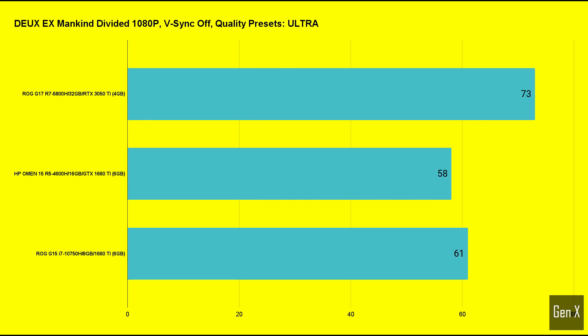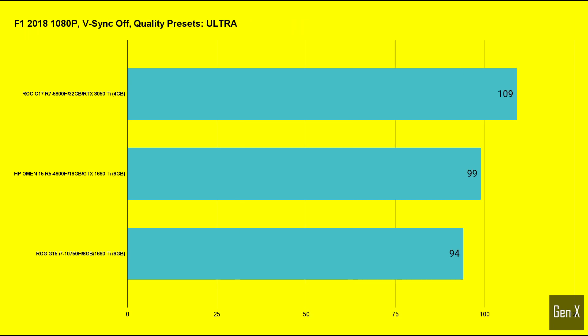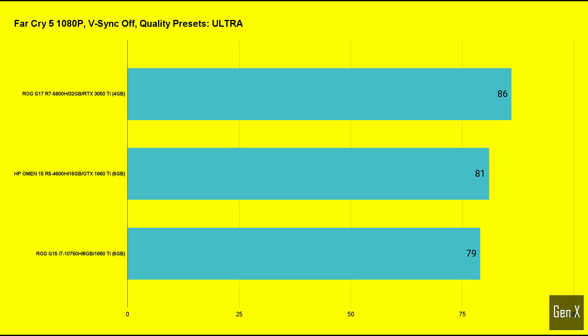Deus Ex: Mankind Divided also has a built-in benchmark tool. In this title, the 3050 Ti scored 73 FPS vs 58 FPS for the Omen 15 and 61 FPS for the 2020 edition of the G15. F1 2018 is a fabulous racer made by Codemasters. The 3050 Ti got 109 FPS in the built-in benchmark — that's 10 frames per second ahead of the Omen and 15 frames per second more than the G15. Far Cry 5 scored 86 FPS with the RTX 3050 Ti, just ahead of the HP Omen at 81 FPS and the G15 at 79 FPS.